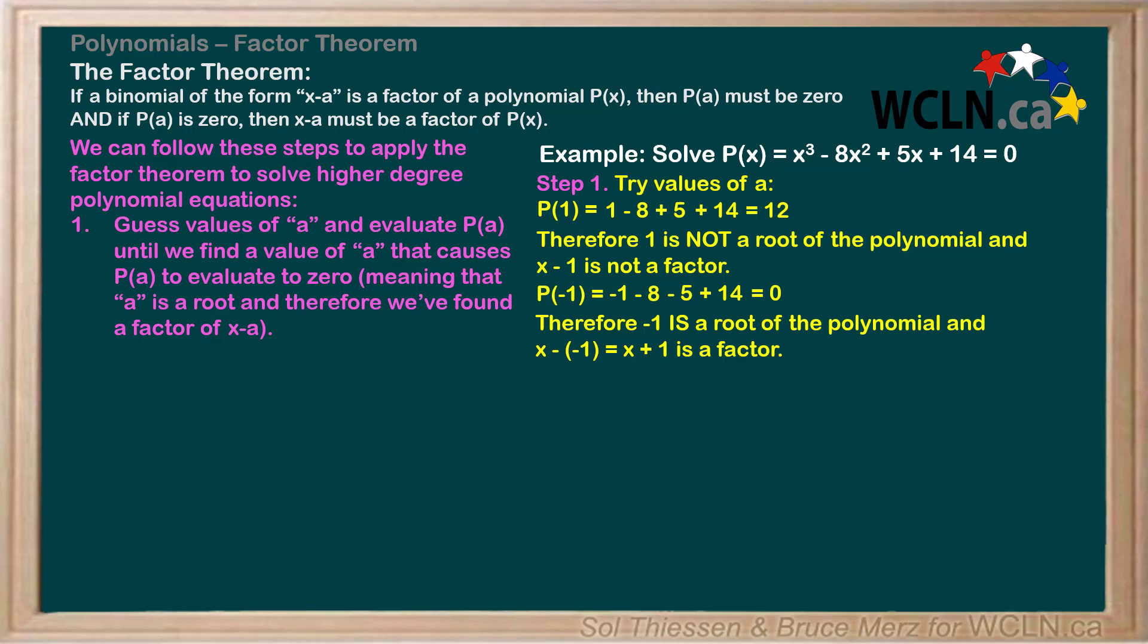On to step 2, which is to divide P(x) by the factor x minus a to give us a quotient q(x) that is one degree lower than P(x). In other words, we know that P(x) can be expressed as some quotient q(x) times the factor we just found, x plus 1. But what is q(x), the quotient expression?